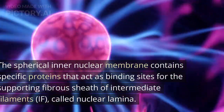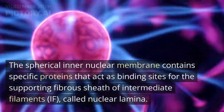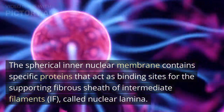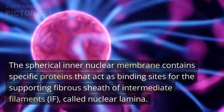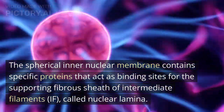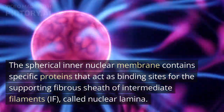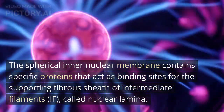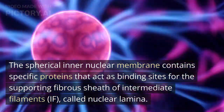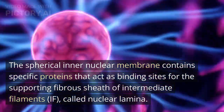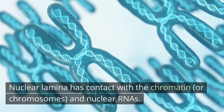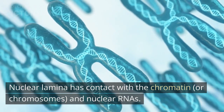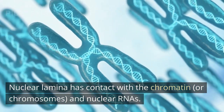The spherical inner nuclear membrane contains specific proteins that act as binding sites for the supporting fibrous sheath of intermediate filaments, called nuclear lamina. Nuclear lamina has contact with the chromatin, or chromosomes, and nuclear RNAs.